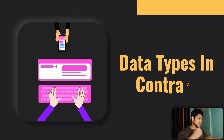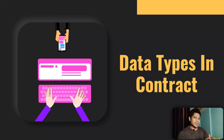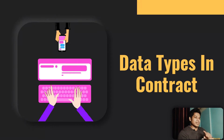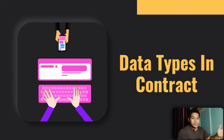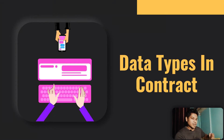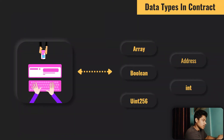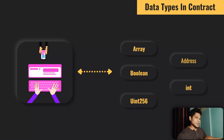The next part is data types in contracts. All programming languages have their own data types, and similarly Solidity has its own. One data type will cost you less money and another will cost you more. For example, if you use string as a storage variable, it will definitely cost you higher gas fees when you deploy or do transactions. But if you use bytes32, it will cost you less. We generally have seven main data types: array, boolean, uint, address, int, string, and bytes.